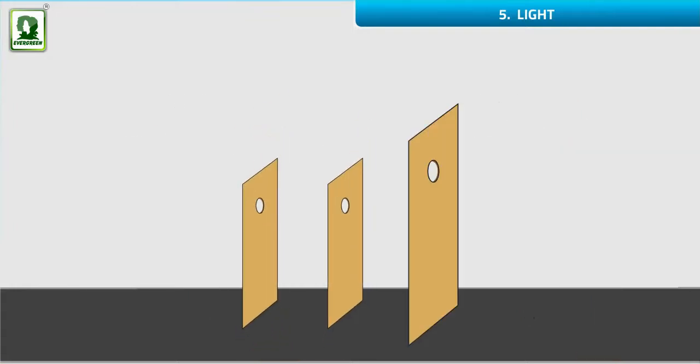Take three rectangular cardboard pieces, A, B, and C. Make small holes in their center and place them vertically.